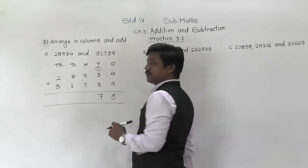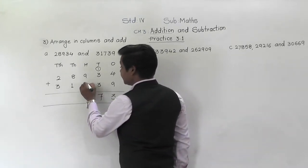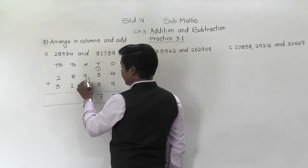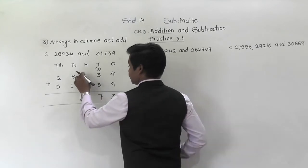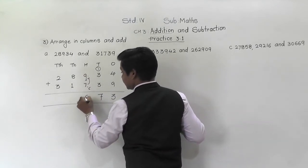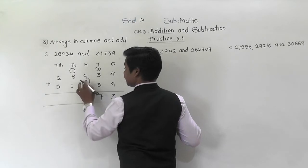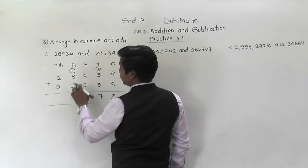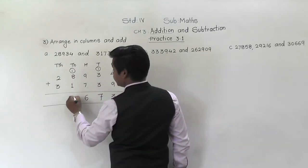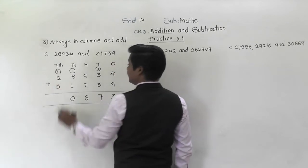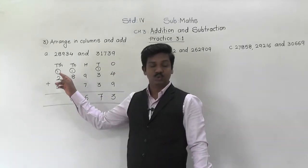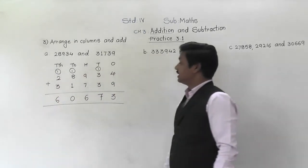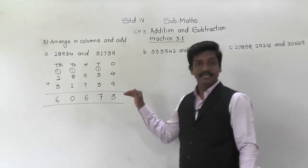9 plus 7 is 16 — 6 will come down, 1 will be carried. 8 plus 1 is 9, and 9 plus 1 is 10 — 0 will come down, 1 will be carried. 3 plus 2 is 5, and 5 plus 1 is 6. So the answer is 60,673.